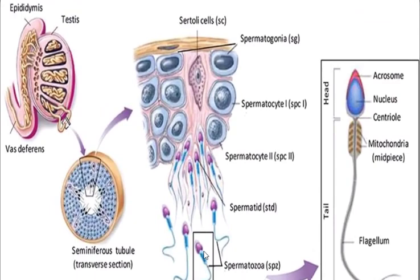Looking at the diagram, this is a testis and this is the transverse section of the seminiferous tubule present in the testis. We can see that at its periphery the spermatogonia and Sertoli cells are present. Sertoli cells are responsible for the nourishment of sperm cells. The spermatogonia differentiate by mitosis into spermatocytes, then primary spermatocytes convert to secondary spermatocytes, which further convert to spermatids. Differentiation then occurs in the spermatids and they form the mature sperm with a proper head, midpiece, and flagellum.